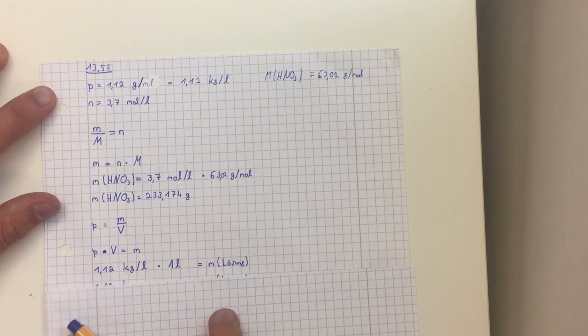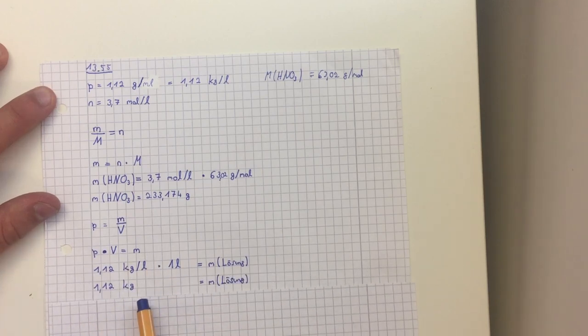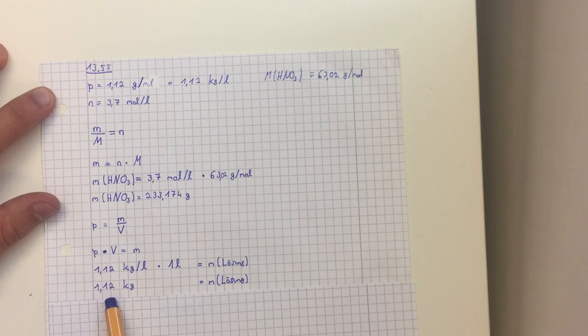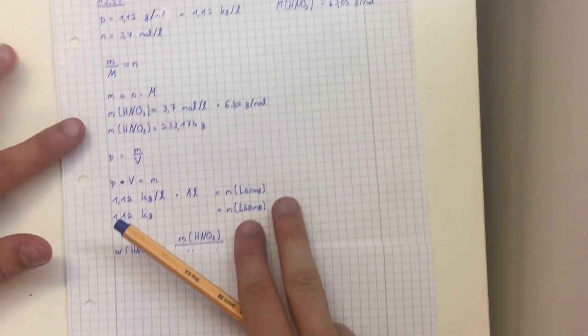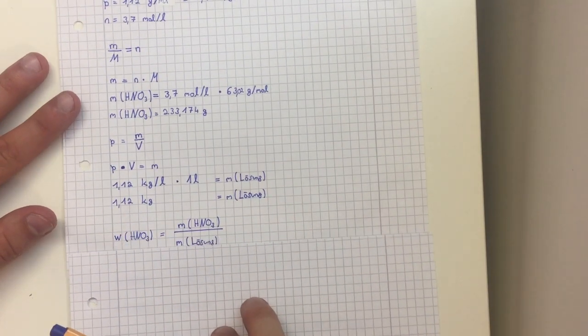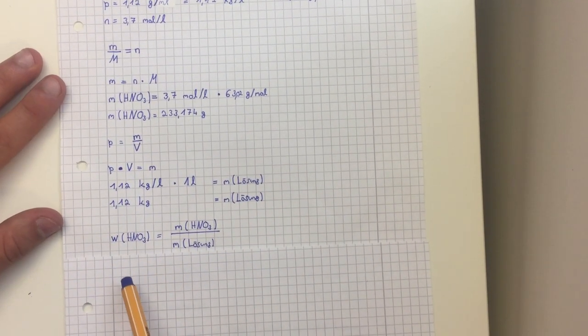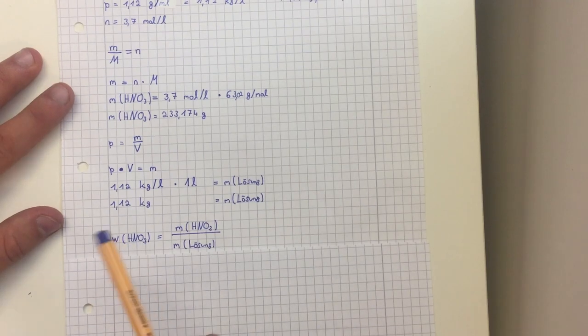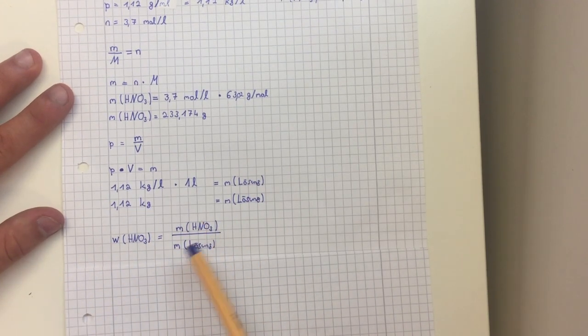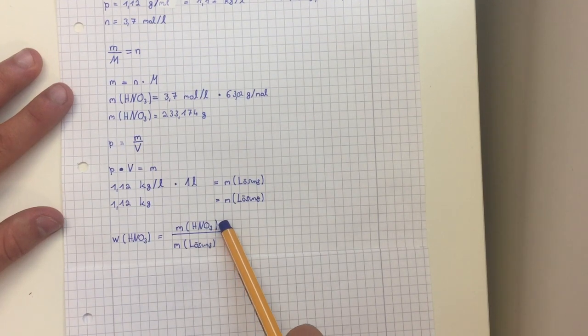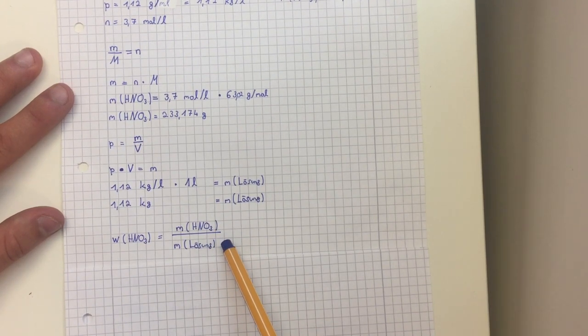Now we want to know how big the mass percent of HNO3 is in the solution. We take the formula which is equal to the mass of HNO3 divided by the mass of the solution.